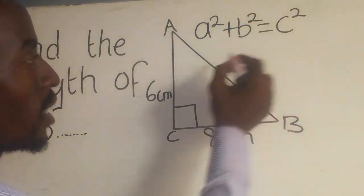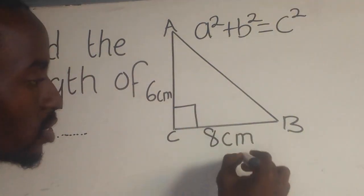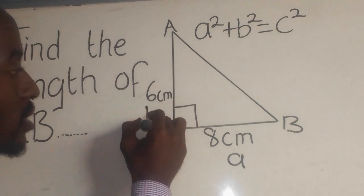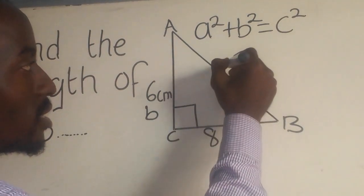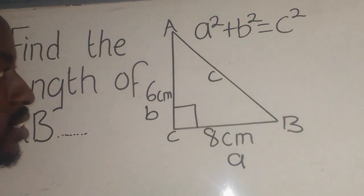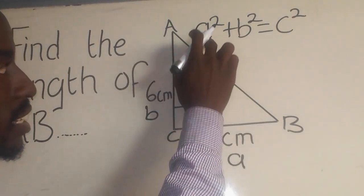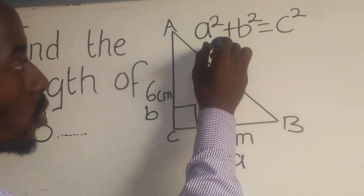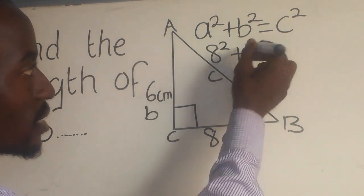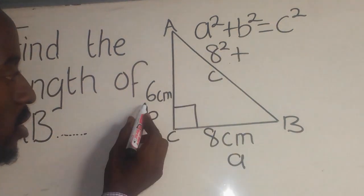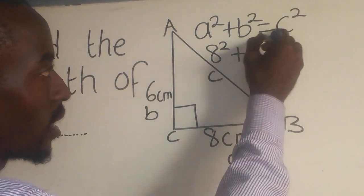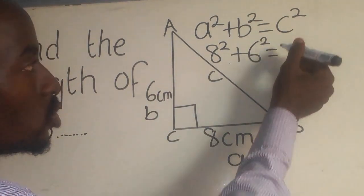You have seen, right? So c is for AB. What is a? a is 8. So it will be 8² plus what is b? This one, 6². That equals c², which is AB we don't know. So it will be like this.